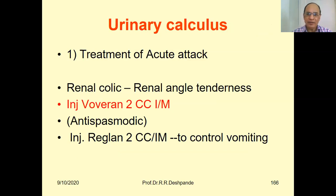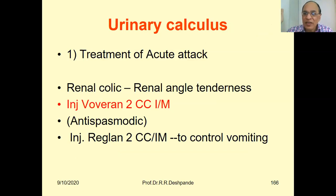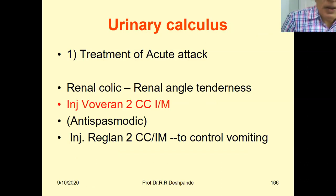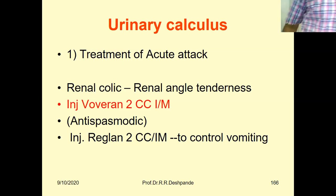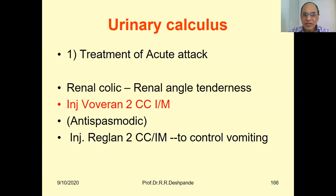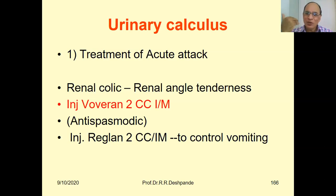For the acute attack of urinary calculus, one hour before there was no pain and all of a sudden the patient is in severe pain — this is the acute attack. Renal colic is diagnosed by renal angle tenderness. The renal angle is located on the back side below the scapula. When the doctor presses and the patient screams, that is tenderness. Pain is a subjective symptom; tenderness is an objective sign diagnosed by the doctor.